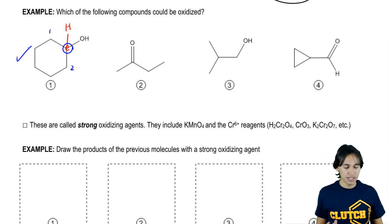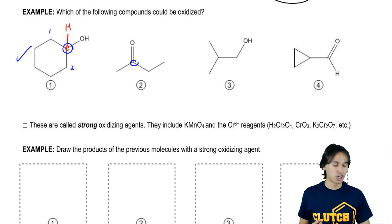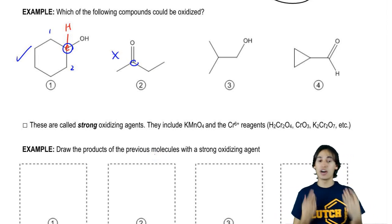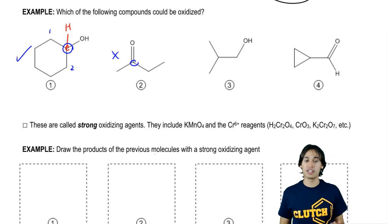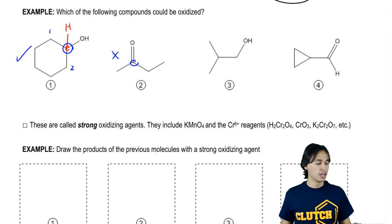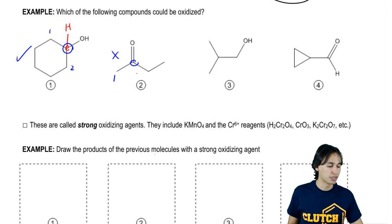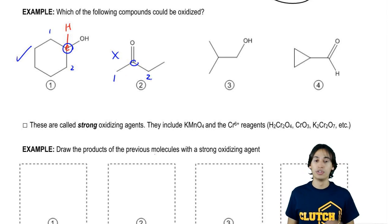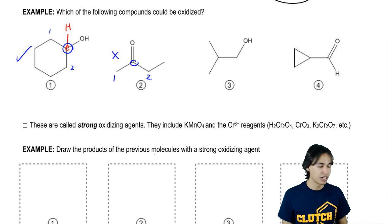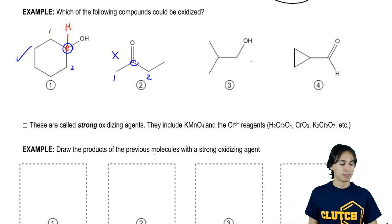Let's move on to the next one. This carbon — could it be oxidized? No. This one is not going to be able to be oxidized because notice that it already has its maximum number of bonds to oxygen. It has two carbons — one, two. Is there a way to add a third bond to oxygen? No.